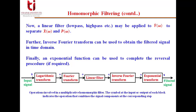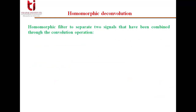This can be seen in a block diagram showing the operations involved in a multiplicative homomorphic filter. The symbol at the input or output of each block indicates the operation combining the signal components at that step. At the input we have multiplication; the logarithmic transform converts it to addition; the Fourier transform moves it to the frequency domain for linear filtering; then inverse Fourier transform and exponential transform recover the filtered signal.